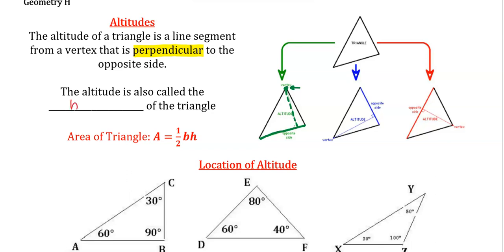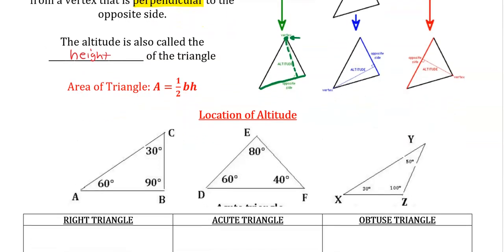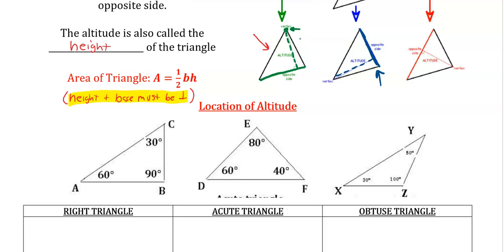Another name for the altitude that you've probably heard is that it's considered the height of the triangle. The area formula for a triangle is brought up here — this lesson isn't really going to talk much about area, but the height and base must be perpendicular. If you know the length of your opposite side and the length of your altitude, you can find the area of the triangle.